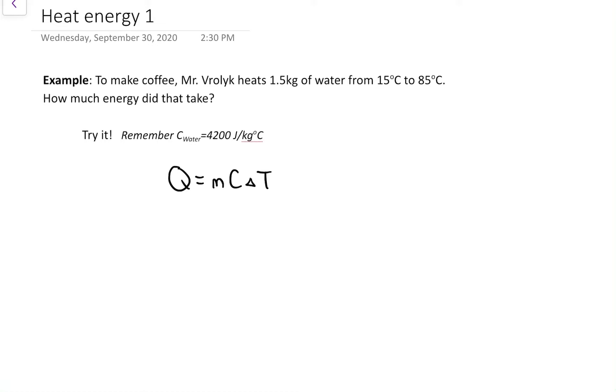Q stands for the heat energy, M is the mass in kilograms, C is the weird one - it's the specific heat capacity.